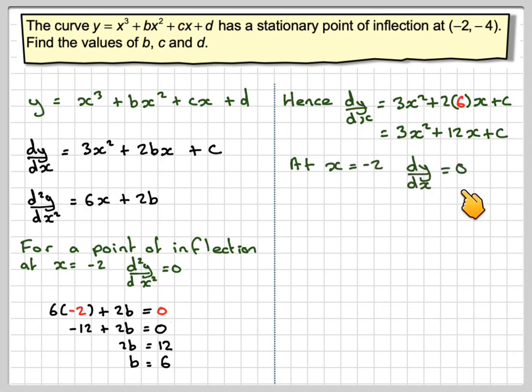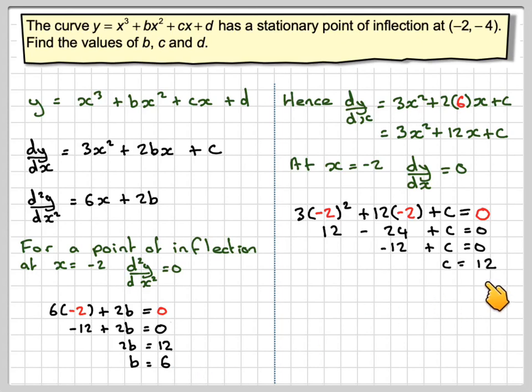So when x is minus 2, dy by dx equals 0. We have 3 times minus 2 squared plus 12 times minus 2 plus c equals 0. Minus 2 squared is 4, times 3 is 12, minus 24 plus c equals 0. 12 minus 24 gives minus 12 plus c equals 0. C equals 12.